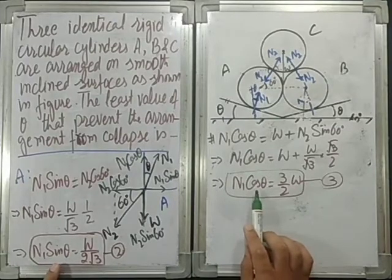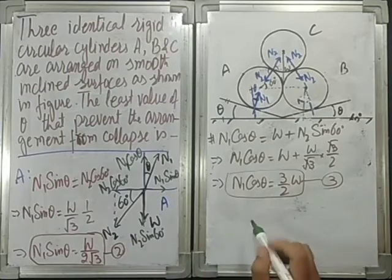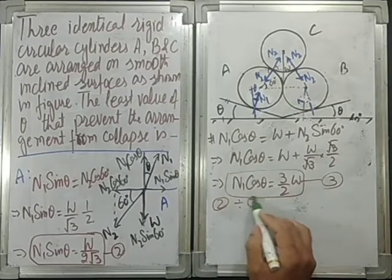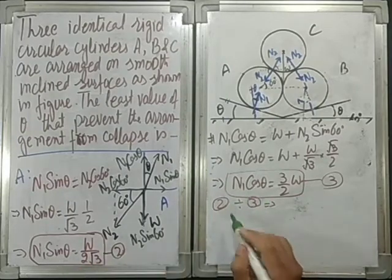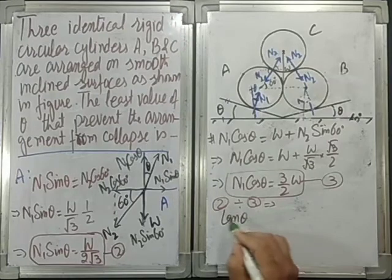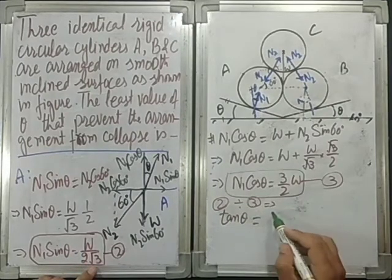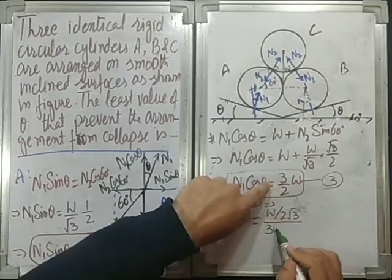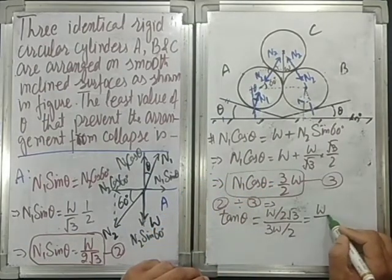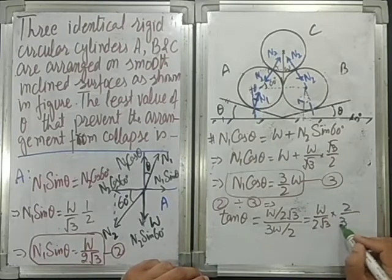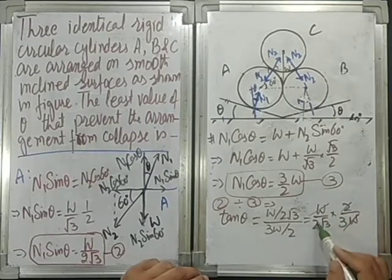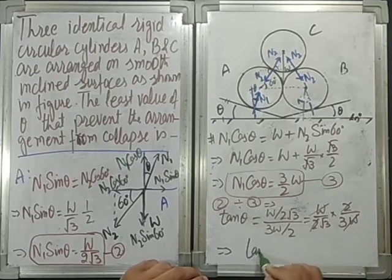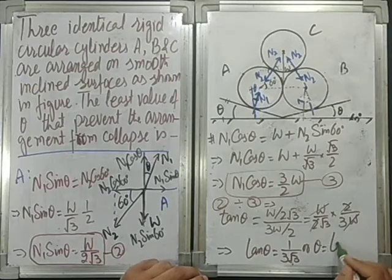Dividing equation 2 by equation 3: N1 cancels out, giving tan theta = [W/(2√3)] / [3W/2]. Simplifying: tan theta = (W/(2√3)) × (2/(3W)) = 1/(3√3). Therefore theta = tan inverse of 1/(3√3). This is the least value of theta that prevents the arrangement from collapsing.